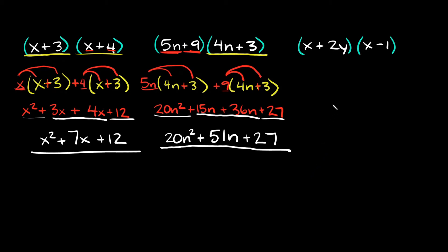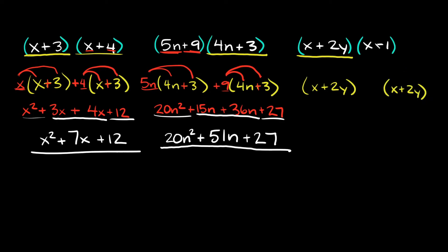Let's do one last example, and this one is going to have a minus sign in it, so let me show you how to deal with that. I'm going to take the same approach as the first problem — just use this first set of parentheses and write it twice: (x + 2y) and (x + 2y). Then I'll come to my second set of parentheses and take my two terms: x and negative 1. So I'll put x here and negative 1 right there.